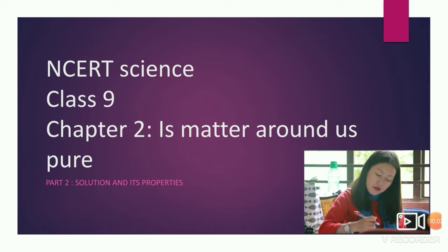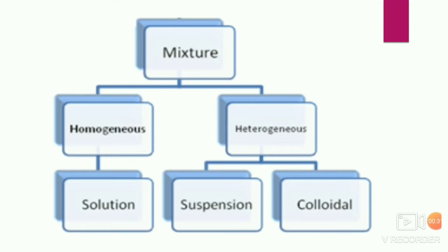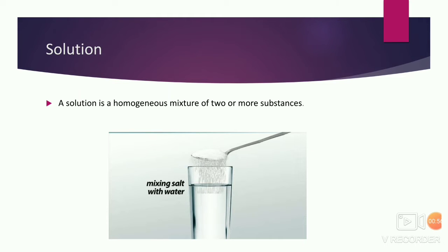Good morning dear students. This is my second video for Class 9, Chapter 2 - Matter Around Us Pure. In my previous video you have seen the two types of matter, that is pure substance and mixture. Today we are going to discuss about solution and its properties. There are two types of mixture - homogeneous mixture and heterogeneous mixture, which we have already studied. Today we are going to discuss the topic: solution. Solution comes under homogeneous mixture.